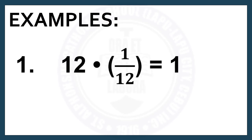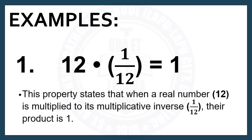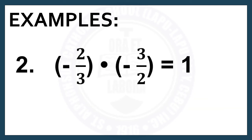Example Number 1: 12 times 1 over 12 is equal to 1. This property states that when a real number, 12, is multiplied to its multiplicative inverse, 1 over 12, their product is 1. Number 2: Negative 2 over 3 times negative 3 over 2 is equal to 1. In this example, negative 3 over 2 is the multiplicative inverse of negative 2 over 3 because their product is 1.